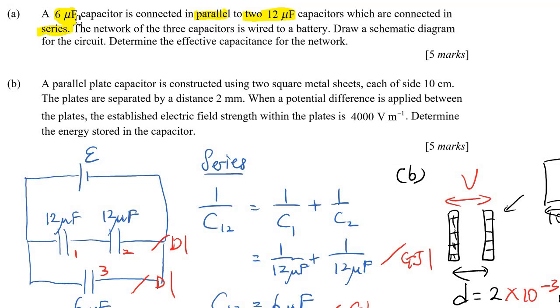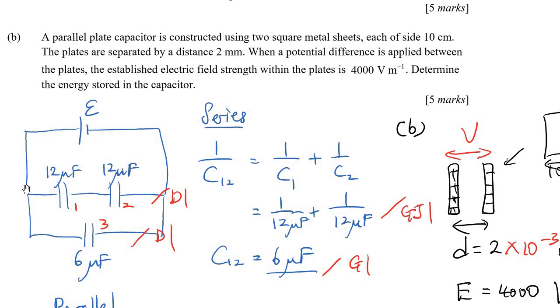This 2, 12 microfarad is in series and only 6 microfarad is in parallel with them. So it's something like this. We must redraw the diagram. The 12 microfarad is series. The 6 microfarad is in parallel with them.